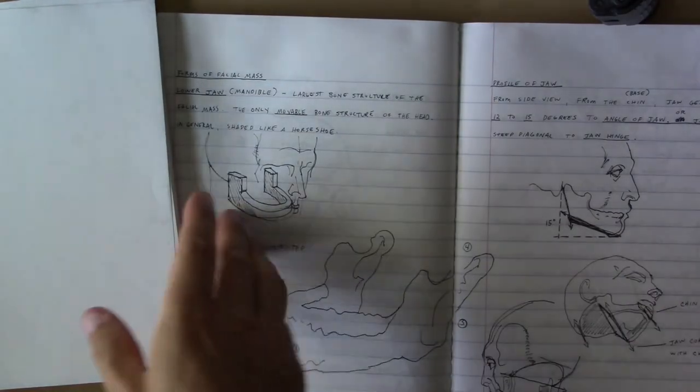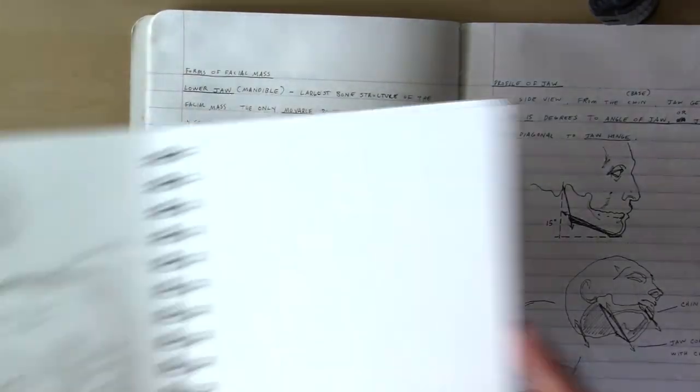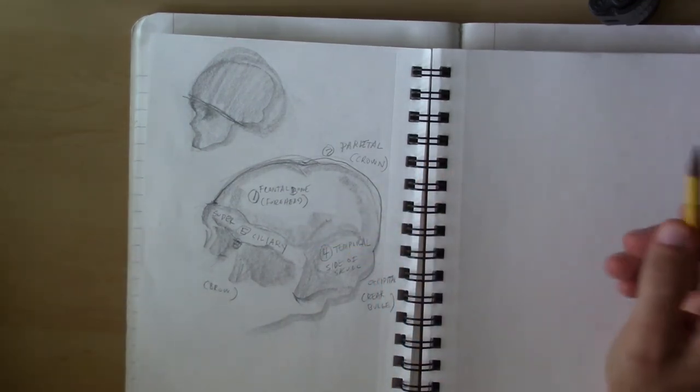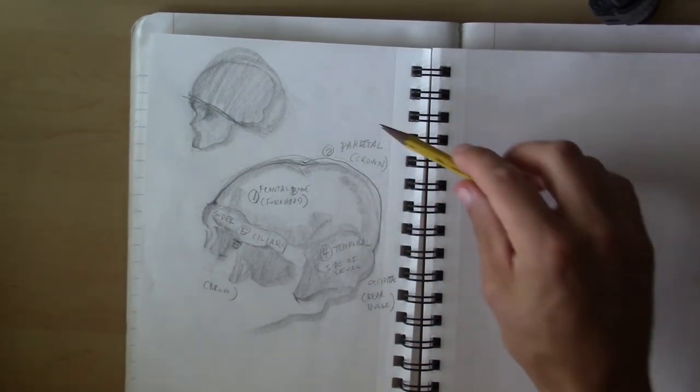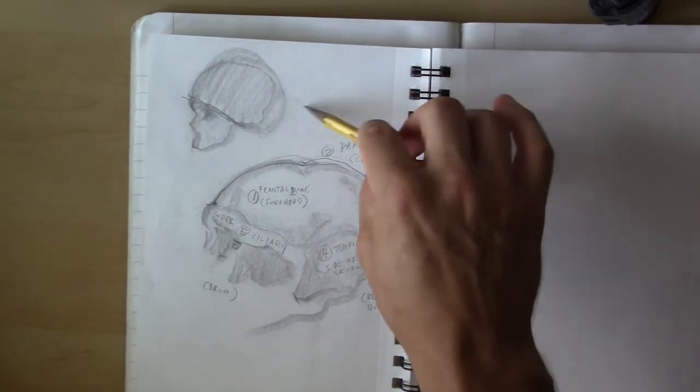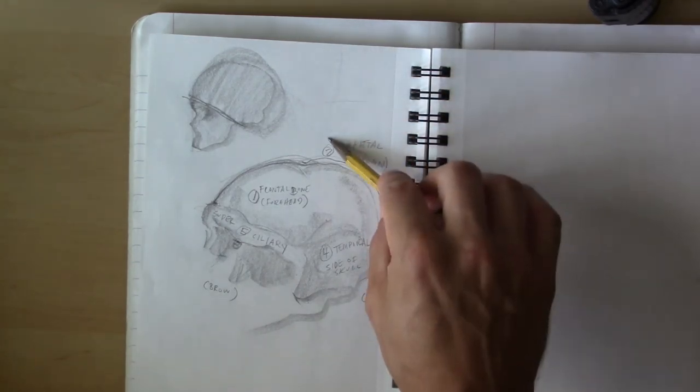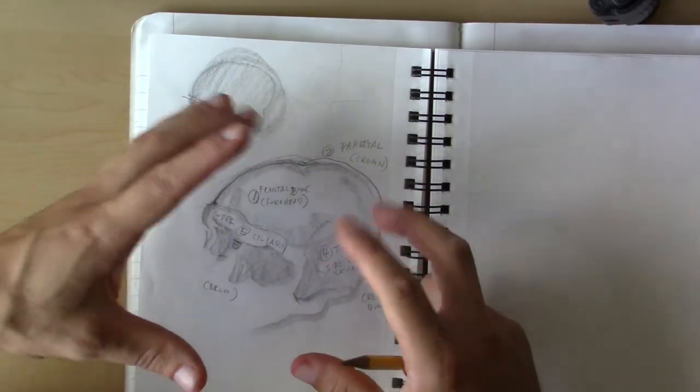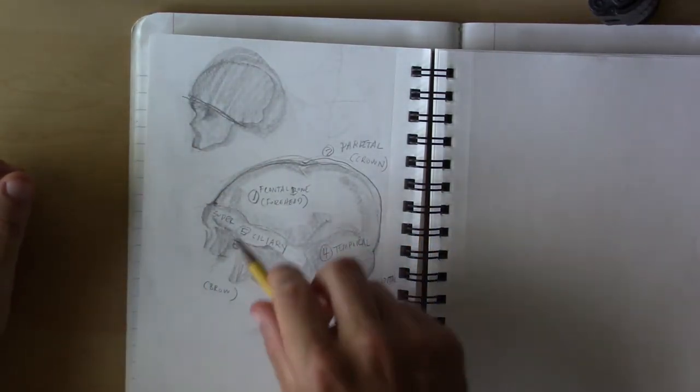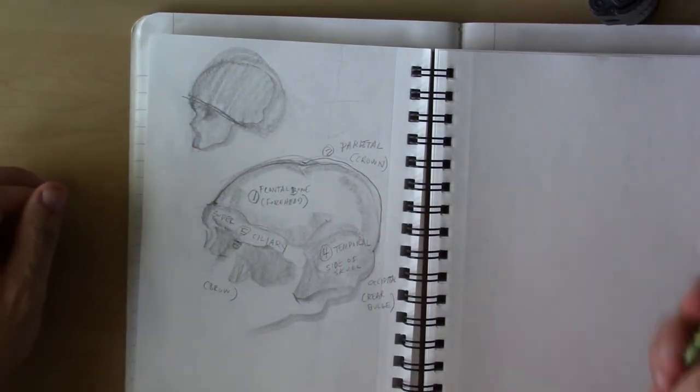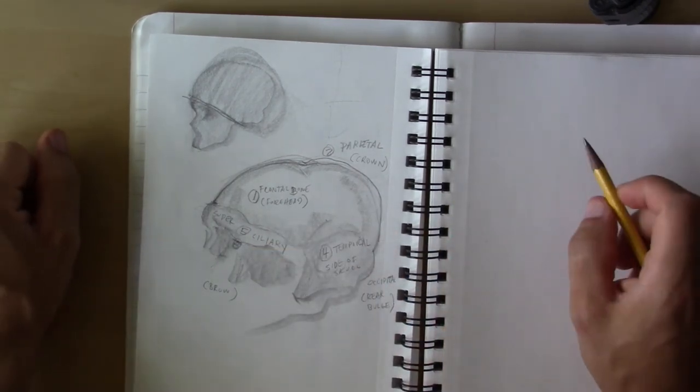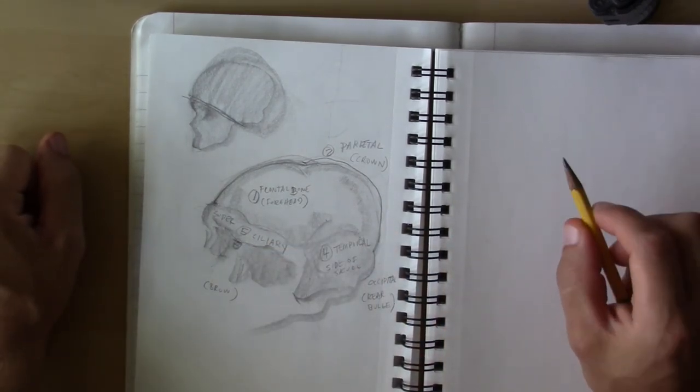Alright, so we left off last time breaking down the major structures of the cranial mass. Do you remember we had the cranial mass and the facial mass? Well, last time we broke down the skull, the cranial mass, into these five major parts. If you need a refresher, that video's there.